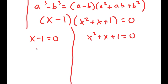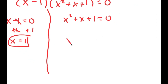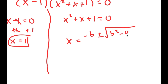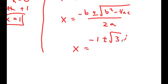For x minus 1 equals 0, all I have to do is add 1 on both sides and I get x is equal to 1. For x squared plus x plus 1 equals 0, I can use the quadratic formula. By using it I get x is equal to negative 1 plus or minus the square root of 3i, over 2. So these are two more solutions.